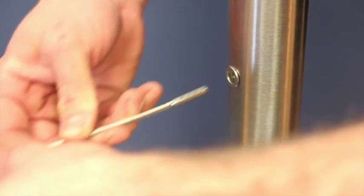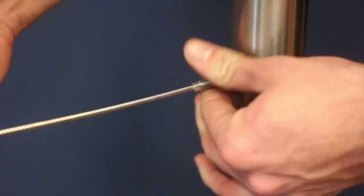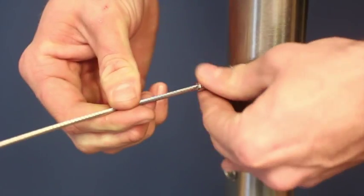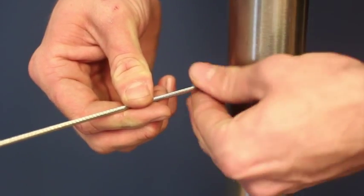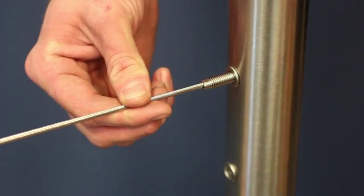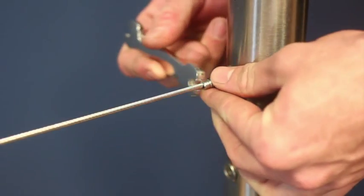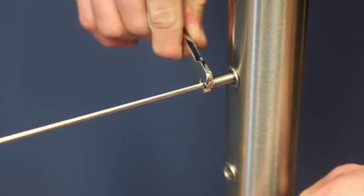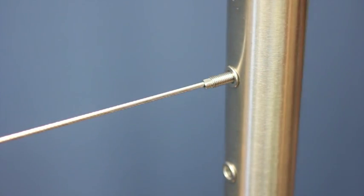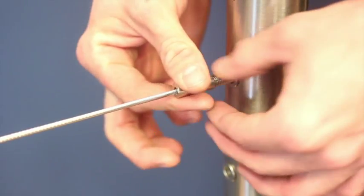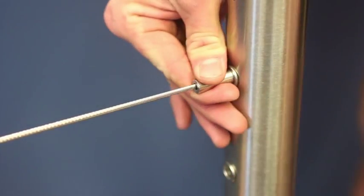Thread the tension rod onto the Nutsert and tension using a ProRig multi-tool. Lock the system in place with your soft jaw pliers by tightening the finishing cap against the nut rivet.